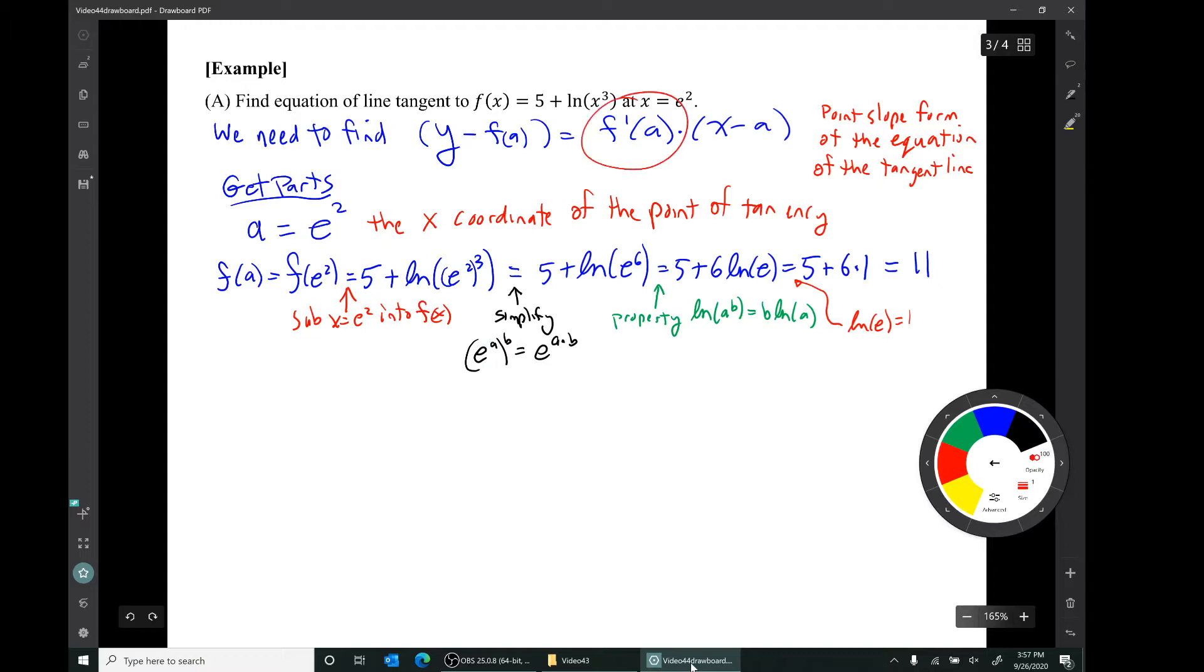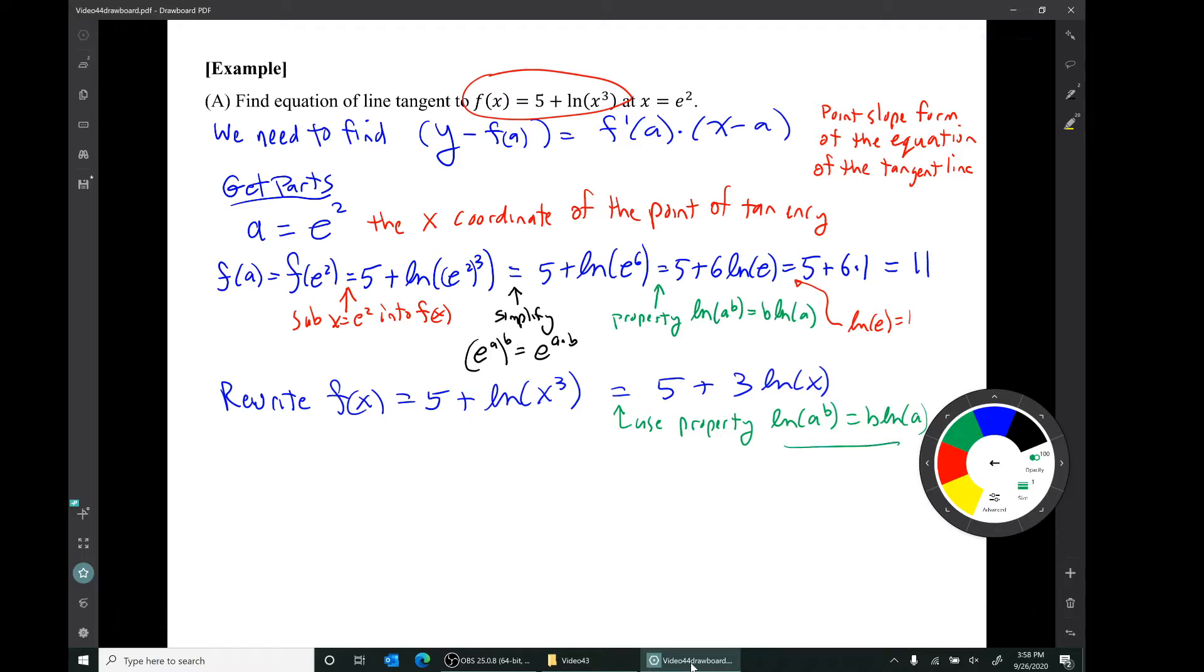Our next job is to get f'(a). But before that, we need to get f'(x), because this symbol means to find the formula for f'(x) and then substitute in x = a. We need to find the derivative of f(x). But before we can do that, we need to rewrite f(x). The rewriting involves this log property: ln(a^b) = b·ln(a). Why do we need to rewrite it? Because our function f(x) has ln(x³), and we need to find the derivative. We can't find the derivative of something that's ln(x³). We have to have something that's just ln of x. We've rewritten f(x). Now, let's find the derivative.